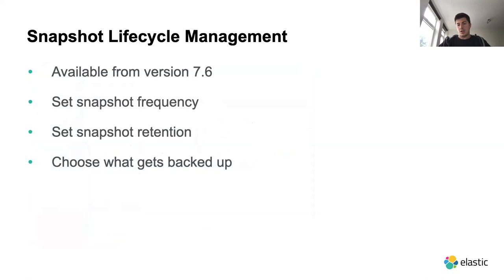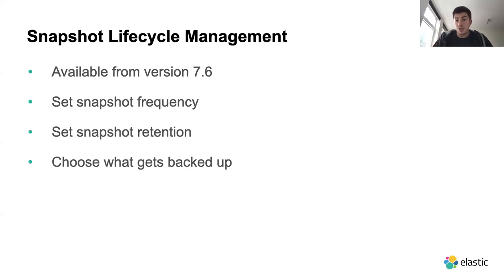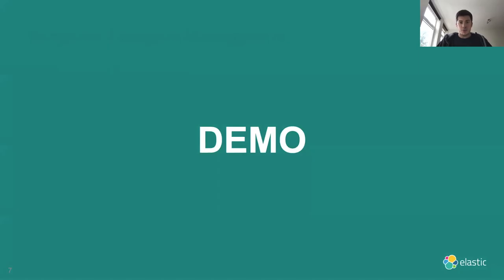Snapshot Lifecycle Management is available from version 7.6 of the Elastic Stack. On top of what you can do with the regular snapshot and restore mechanism, SLM lets you set snapshot frequency, set snapshot retention — so you can keep snapshots for a set amount of time and then delete them — and choose what gets backed up. You can select specific indices or use an index pattern to match existing indices.